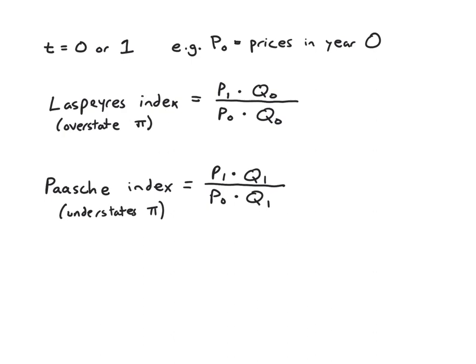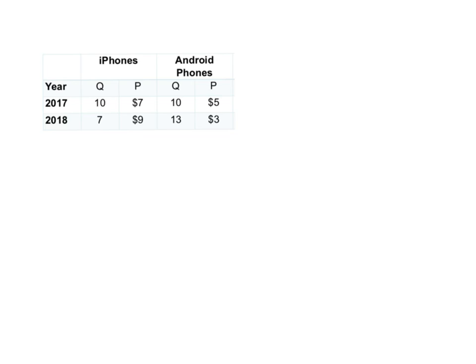All right, so let's do an example calculation. Let's make this concrete with some example calculations. So here's our data. We have iPhone prices and quantities for 2017 and 2018. We have Android phone prices and quantities for the same years. We'll think of 2017 as year zero and 2018 as year one, and then plug them in and calculate with our formula.